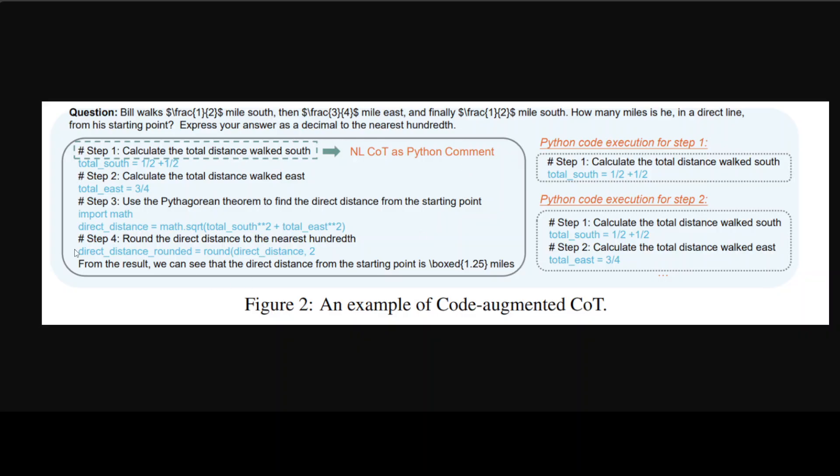How many miles is he in a direct line from a starting point? Express your answer as a decimal to the nearest. As I said earlier, the policy model is generating possible next steps in this whole solution, then the Process Reward Model evaluates the quality of each step, and then Monte Carlo Tree Search explores different possible solutions and selects the best one. The process is repeated until a solution is found.